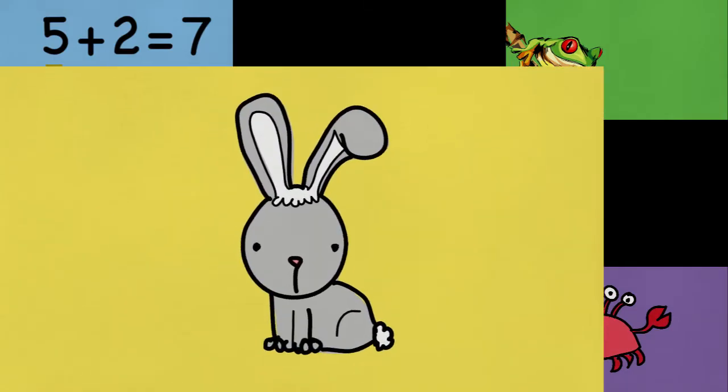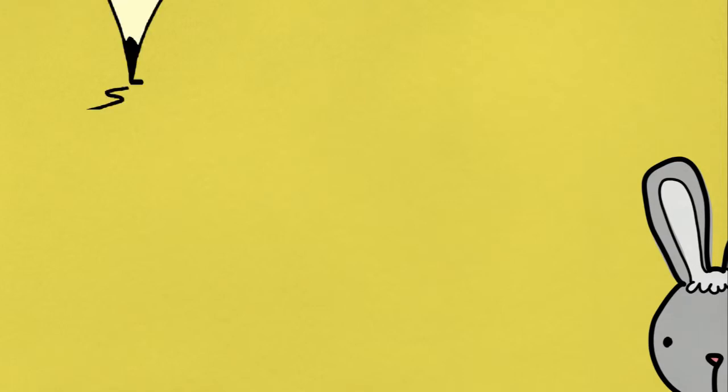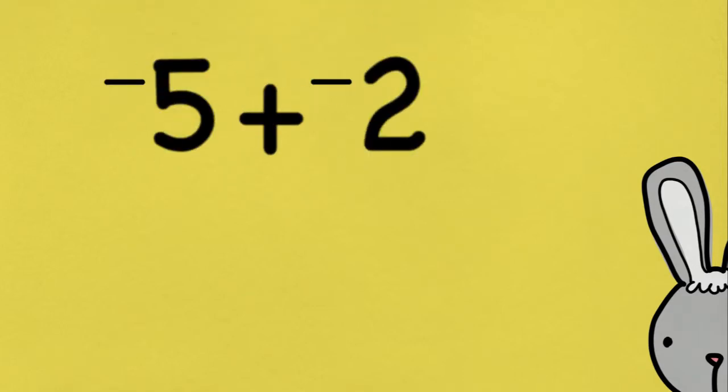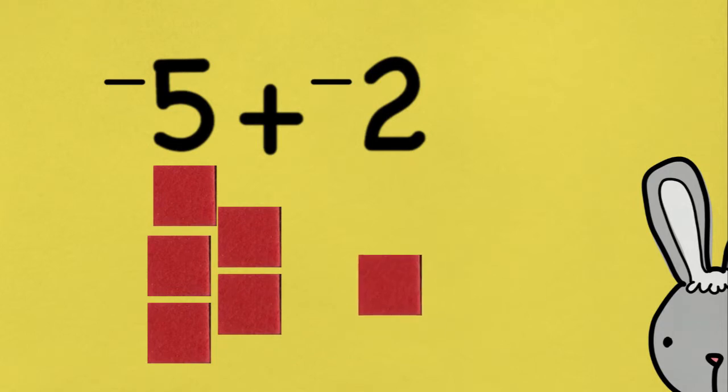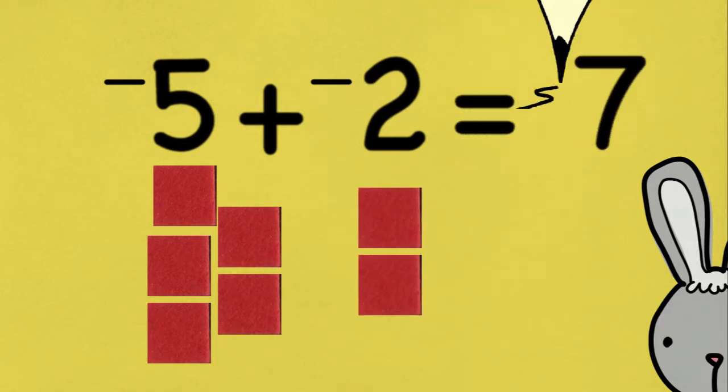What if I had owed $5 and then borrowed $2 more? I would write that as negative 5 plus negative 2. And to solve this with tiles, I would lay out 5 negative tiles and add 2 more negative tiles, giving me a total of 7 negative tiles. So now I owe $7.